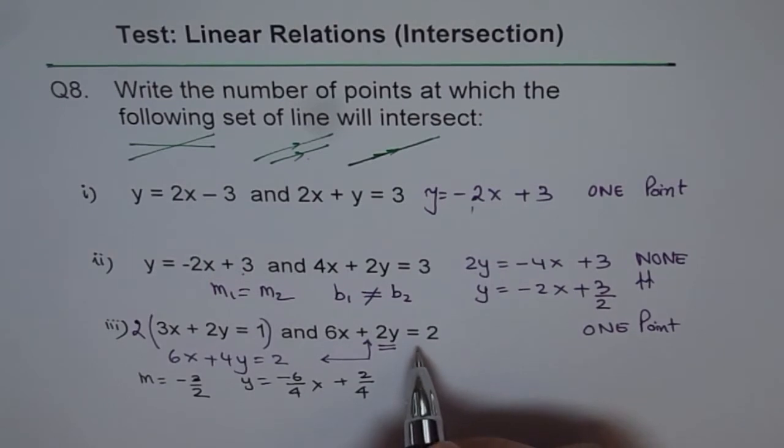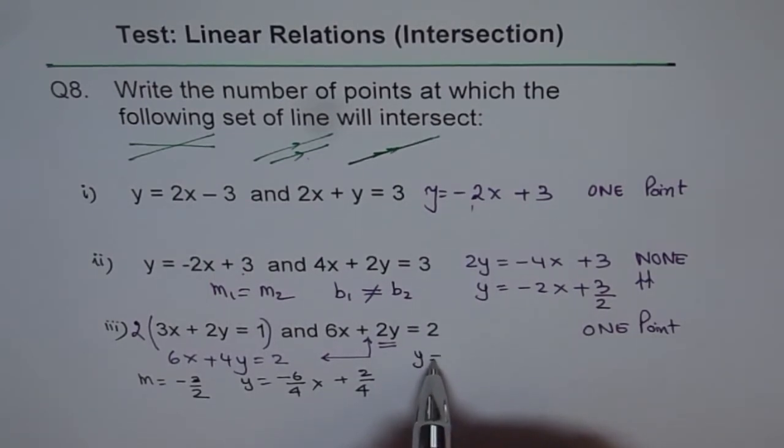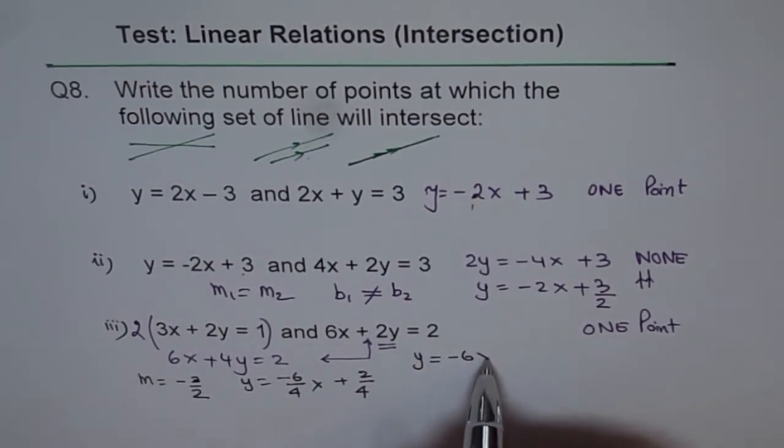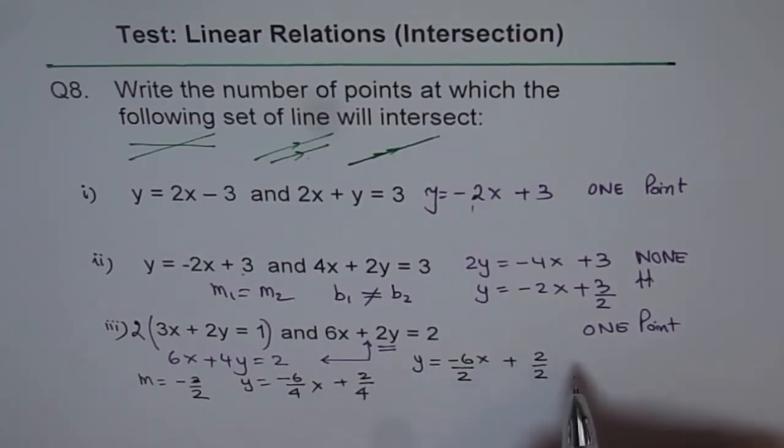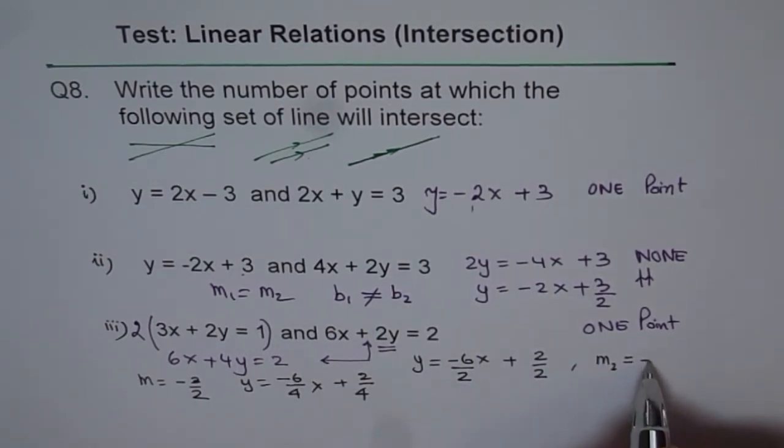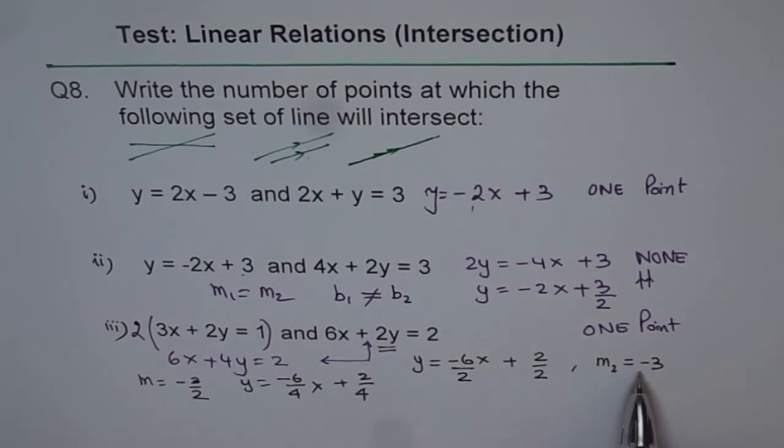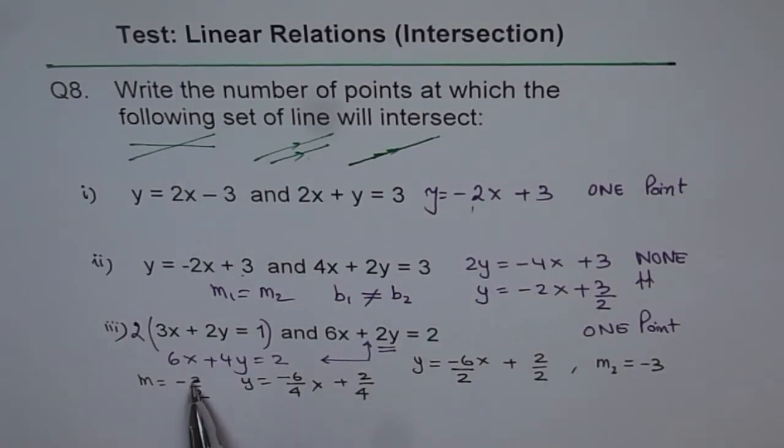And for this line, y is equal to minus 6x divided by 2 plus 2 divided by 2. So the slope here is, that is, m2 is minus 3. So this is minus 3 and this is minus 3 by 2. The slopes are different. And therefore, the lines will intersect at one point. So that is how we can solve these questions.